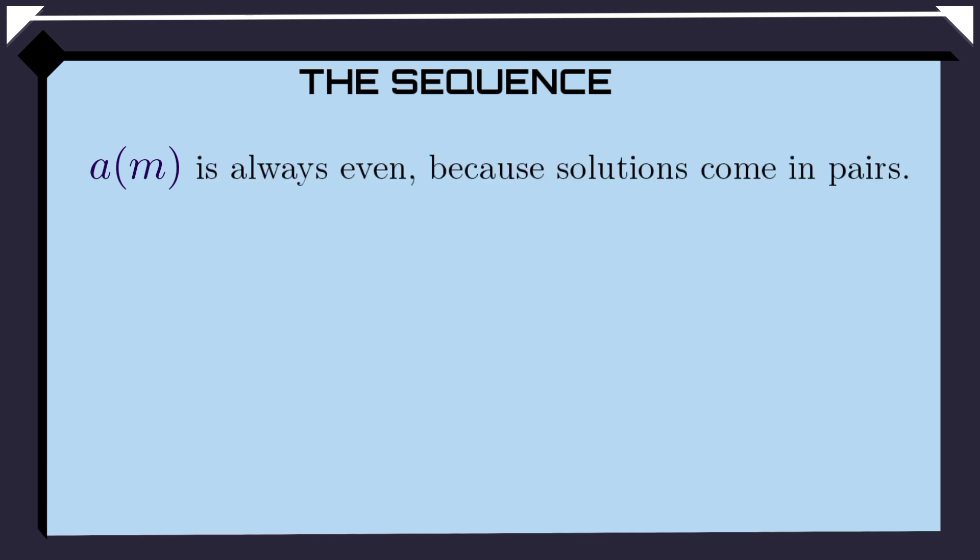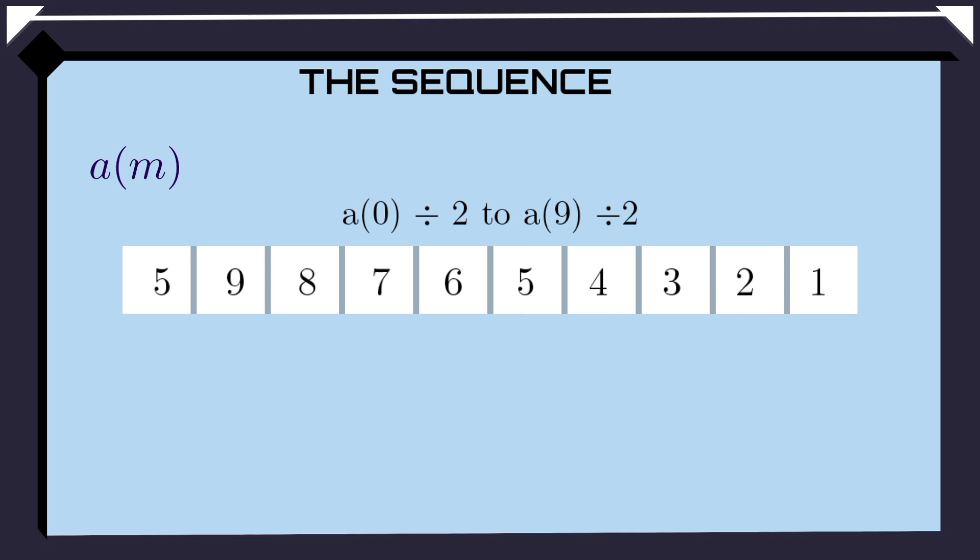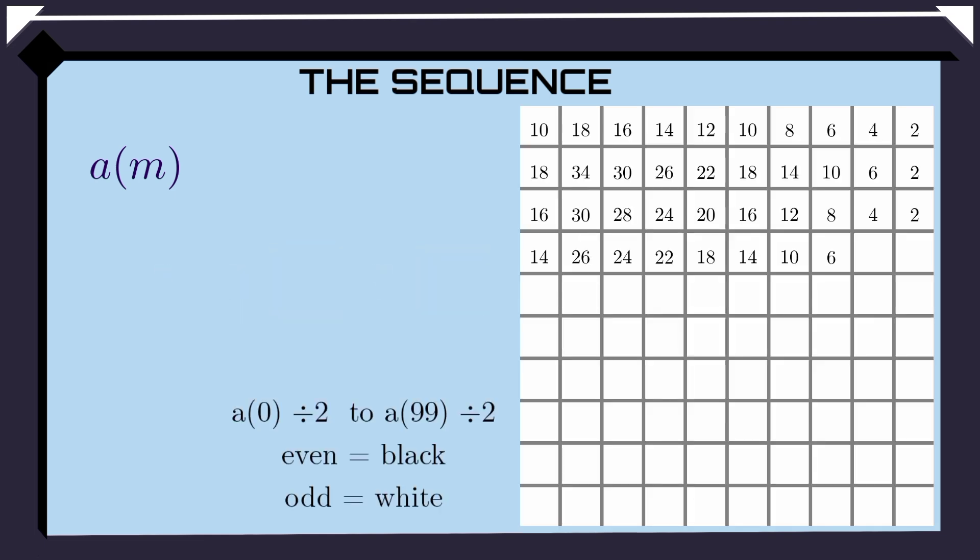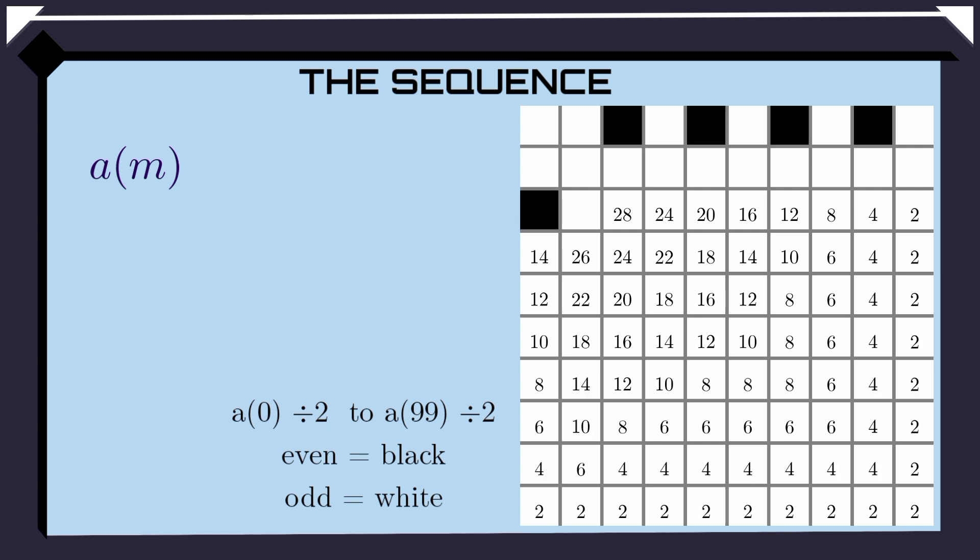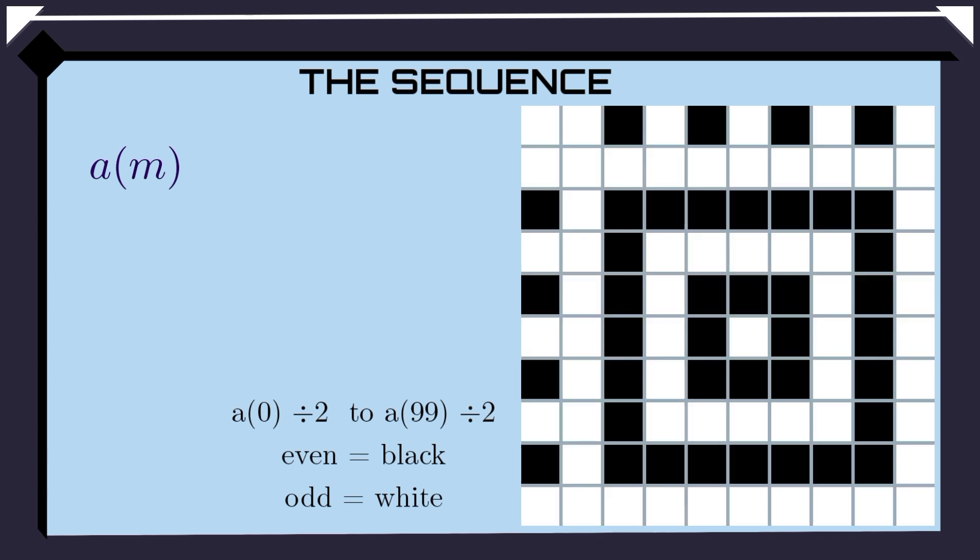We know that A(m) is always even, but what if we divide each term by 2? Then we would get two types of terms, one which stays even, the other which turns into an odd number. Let's see. Let's highlight terms that remained even. This isn't very interesting. So let's arrange the first 100 terms in a 10 by 10 grid and highlight terms which remain even. Now this is quite interesting. Why did we get this pattern?